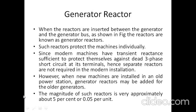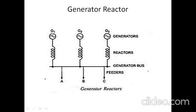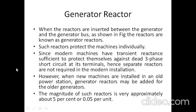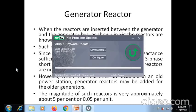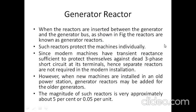Such reactors protect the machines individually, with a separate reactor coil connected along with each individual generator. However, since modern machines have transient reactance sufficient to protect themselves against a dead three-phase short circuit at their terminals, separate reactors are not required in modern installations. In modern installations, the transient reactance is considered sufficient against different faults, so a separate reactor coil is not required in recent installations.